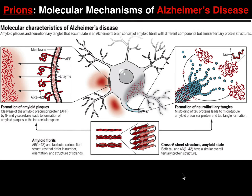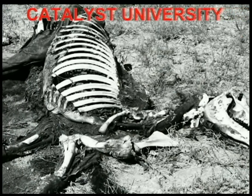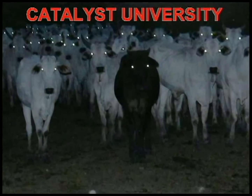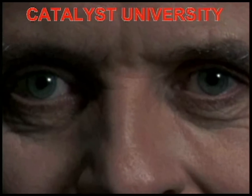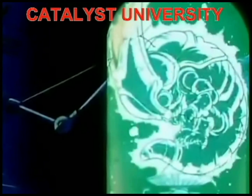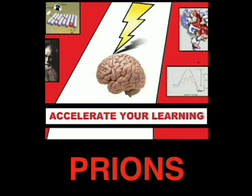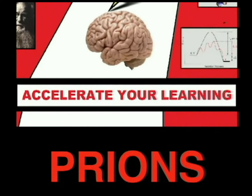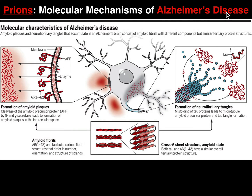Welcome back to Prions on Catalyst University. My name is Kevin Tokoff, and in this video we're going to discuss the two leading hypotheses regarding the progression and development of Alzheimer's disease — specifically its molecular mechanisms — which ultimately lead to neurodegeneration.